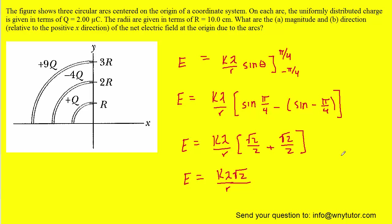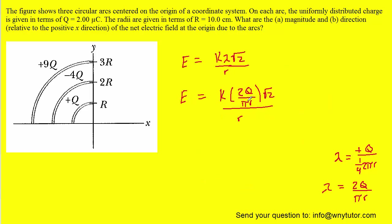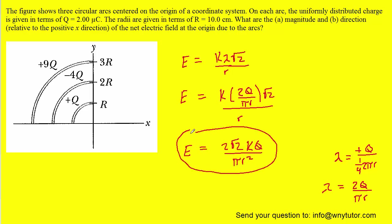Now, lambda is the linear charge density. To find that, we take the entire charge — which is positive q — and divide by the length of this circular arc. Since it's a quarter circle, the arc length is one-fourth of 2πr, giving lambda equals 2q over πr. Substituting 2q/πr in for lambda, and shifting the πr to the denominator algebraically gives πr squared. So this is the expression for the electric field produced by the first circular arc. We'll have similar expressions for the second and third circular arcs, with different values for charge q and radius r.